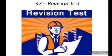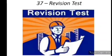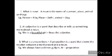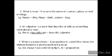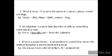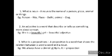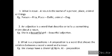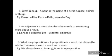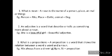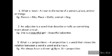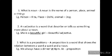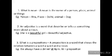Lesson number 37, revision test. Let us revise together. What is a noun? A noun is the name of a person, place, animal or thing. For example: person – Rita, place – Delhi, animal – dog, thing – pencil.